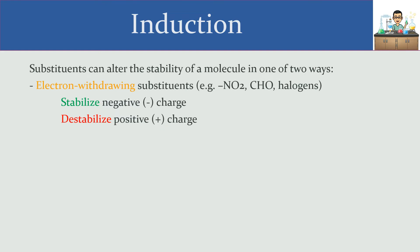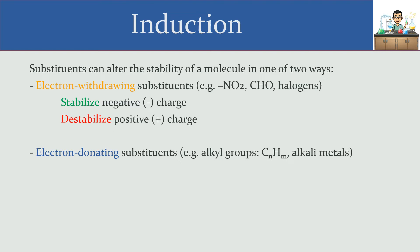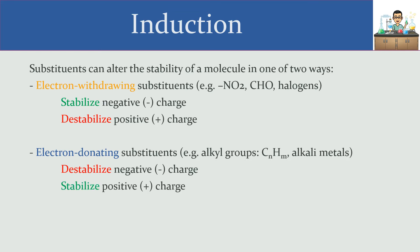What would make things better for a positive charge is if that positive charge were able to get more electron density instead. That's what electron donating substituents do — they have the opposite effect of electron withdrawing substituents because instead of taking electron density away, they're giving electron density back. Examples of electron donating substituents are things that contain carbon and hydrogen, what we call alkyl groups, and alkali metals. Alkali metals are less electronegative than carbon, so attaching something like magnesium or lithium to carbon gives electron density back to that carbon. If you already have a negative charge, even more electron density is bad because the idea is to get closer to neutral. Excess of anything is bad, so electron donating substituents destabilize negative charge and stabilize positive charge instead.